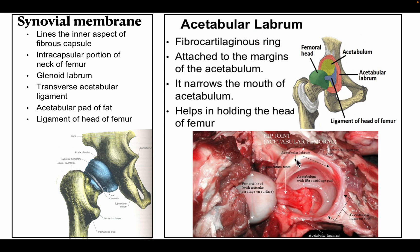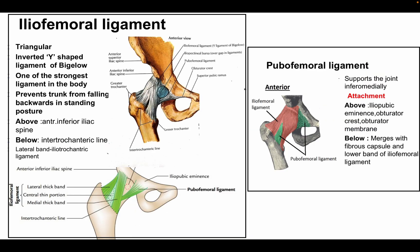The acetabular labrum is a fibrocartilaginous ring attached to the margin of the acetabulum. It narrows the mouth of the acetabulum and helps in holding the head of the femur in place. In the diagram, the brown color indicates the acetabular labrum attached to the margin of the acetabulum.